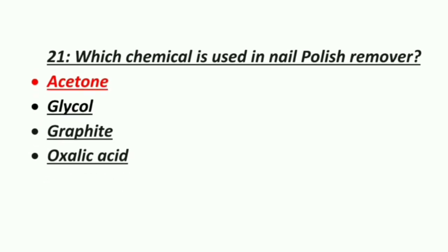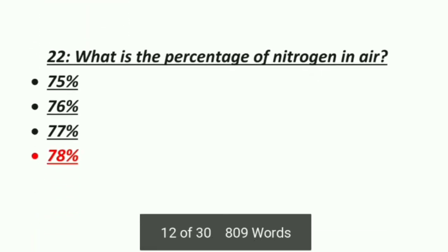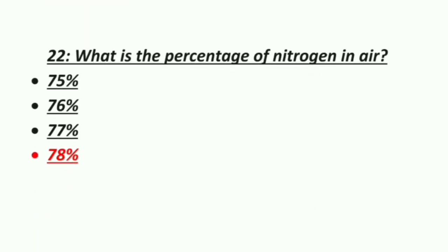Twenty-first MCQ: which chemical is used in nail polish remover? Option 1: Acetone, Option 2: Glycol, Option 3: Graphite, Option 4: Oxalic acid. The correct answer is acetone — acetone is used in nail polish remover.